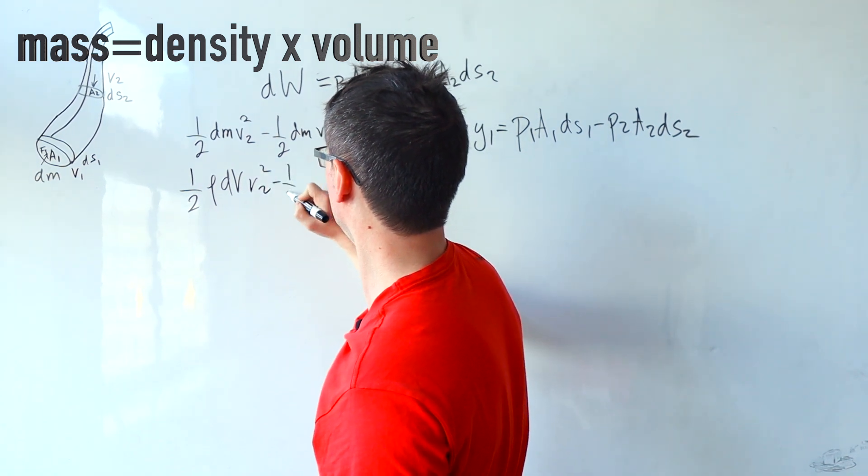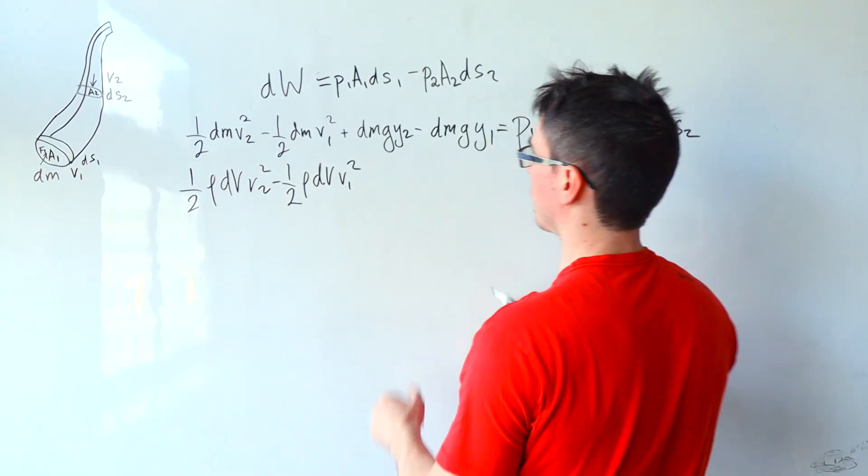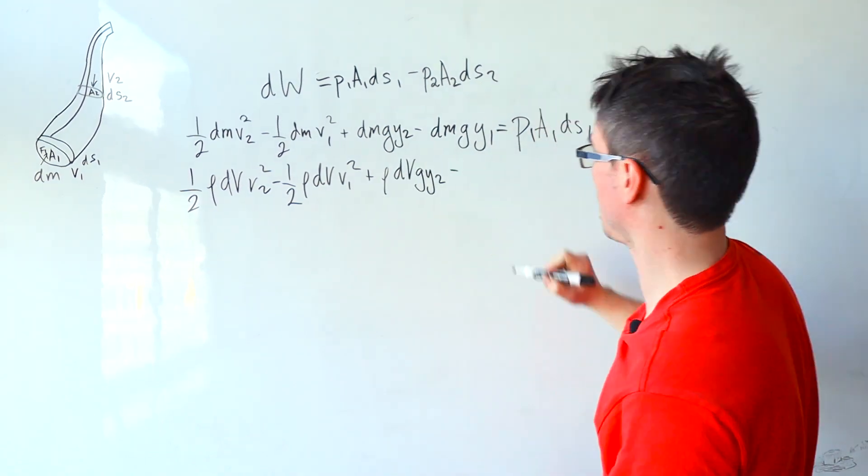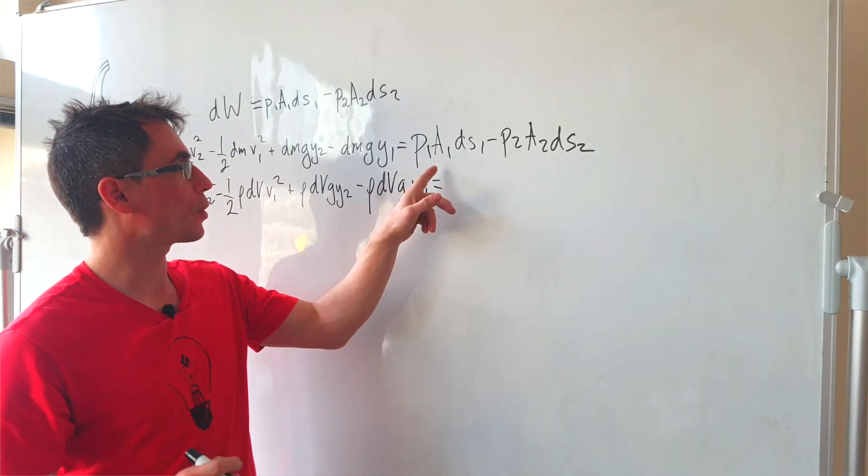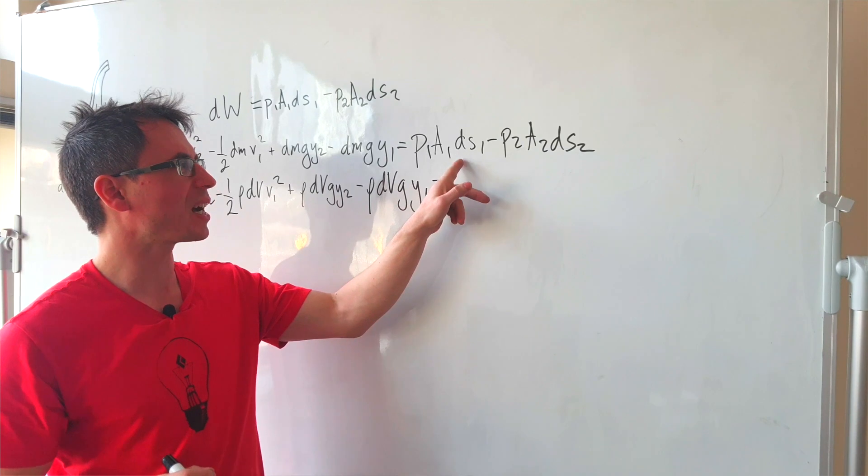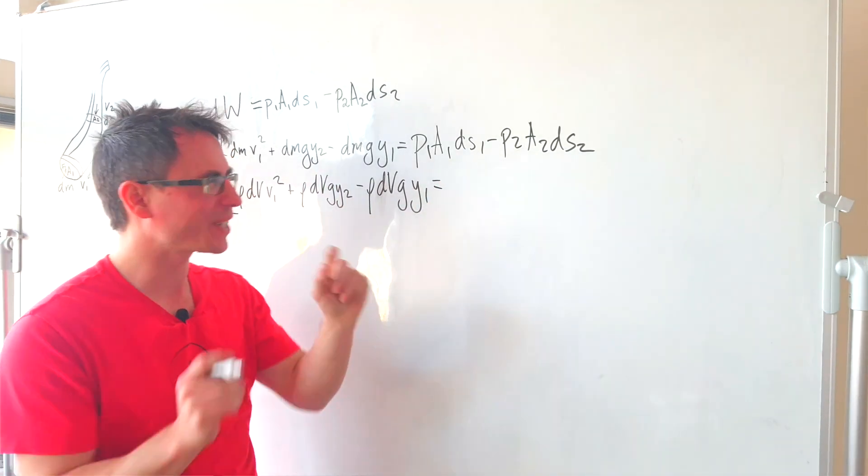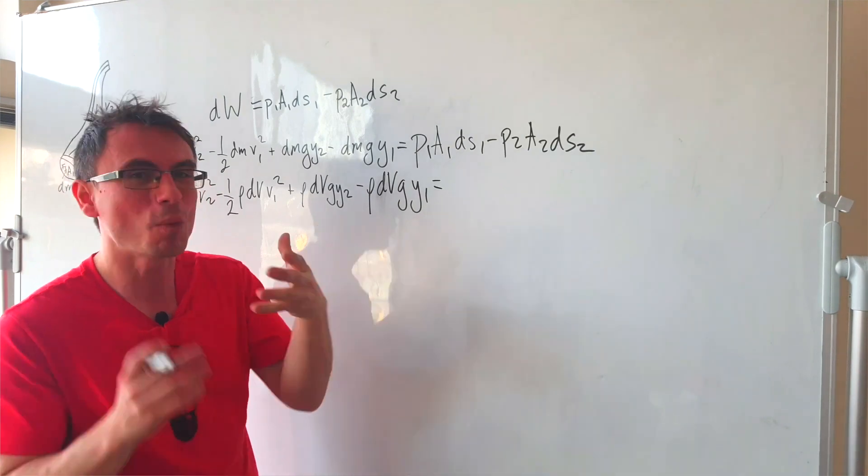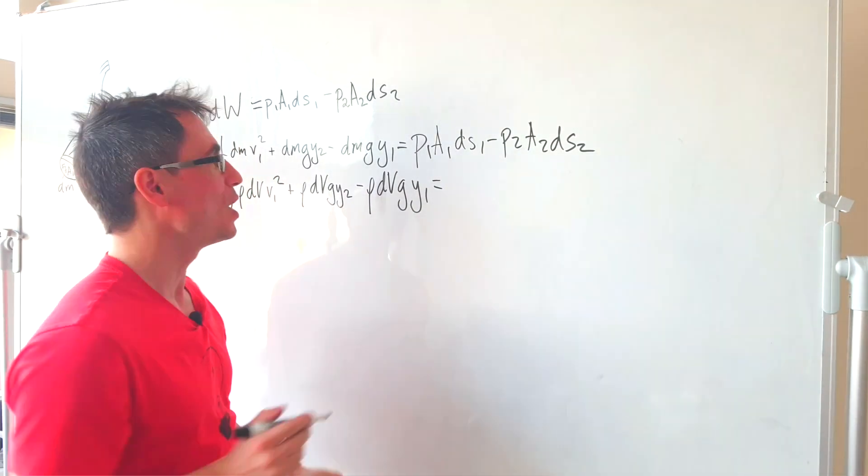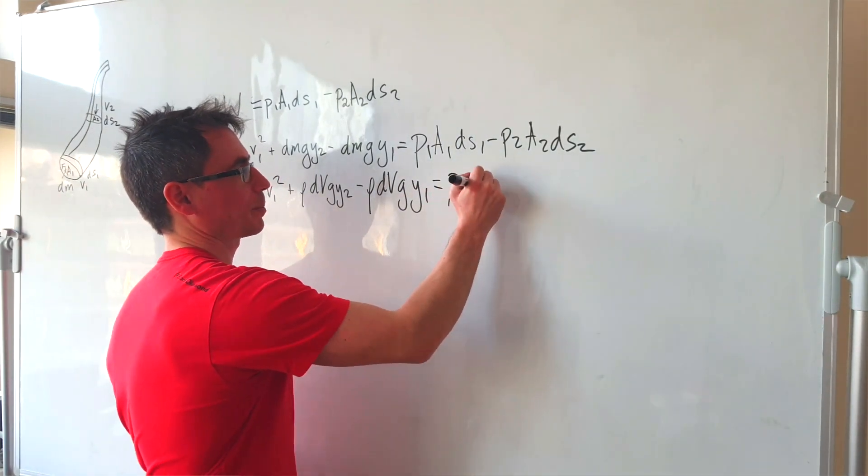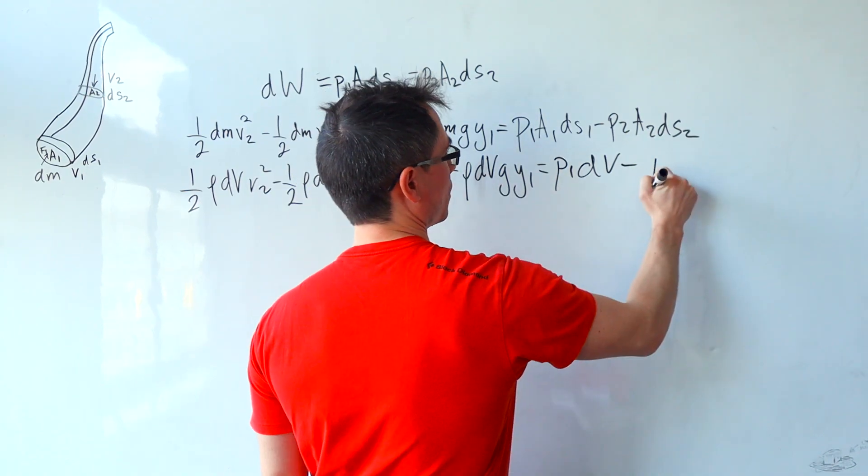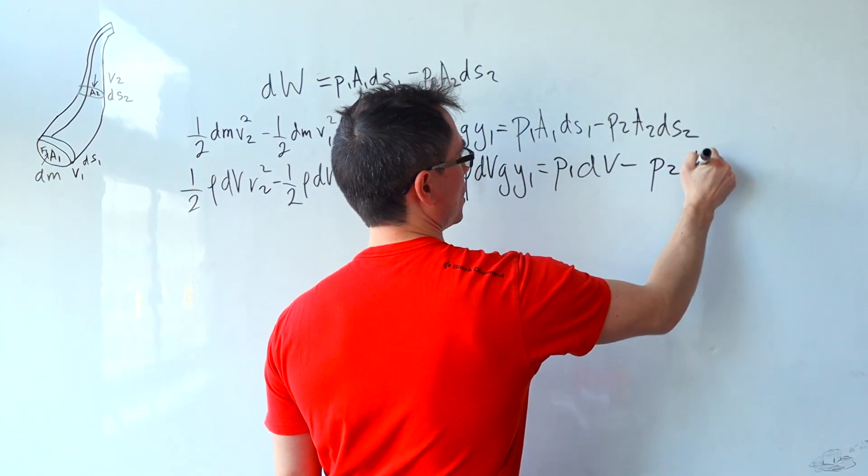v2 squared take away a half rho dv v1 squared plus rho dv g y2 take away. And have a look at something interesting. So the area multiplied by ds which is the tiny distance traveled along the direction will actually just give us the volume. So we can directly write this as P1 dv take away P2 dv.